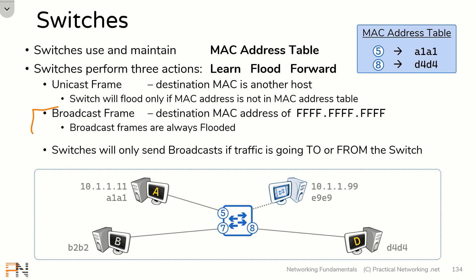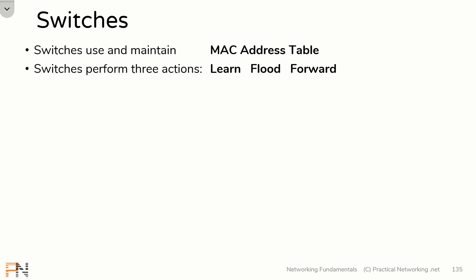A broadcast is always flooded whereas unicast frames are occasionally flooded. That wraps up our discussion on broadcast versus flooding, which brings us to VLANs.